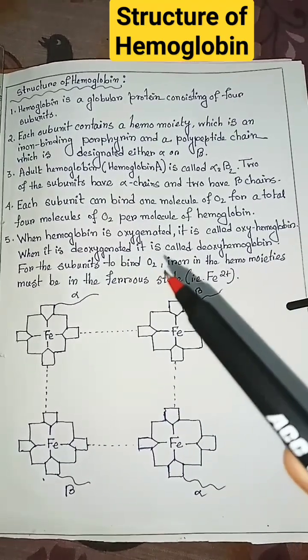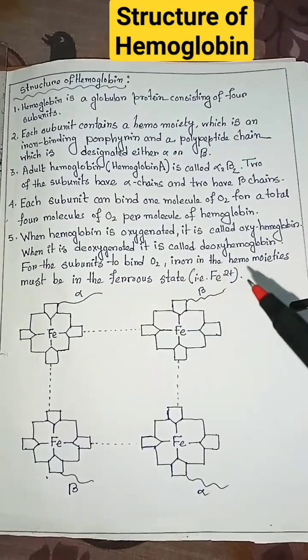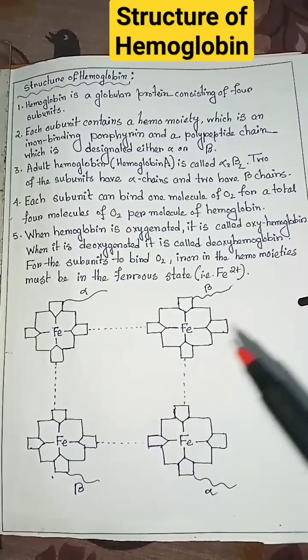For the subunits to bind oxygen, iron in the hemomoieties must be in the ferrous state. This is the structure of hemoglobin.